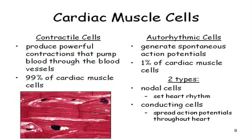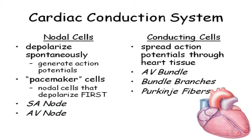To recap: most cells are contractile cells. The technical auto-rhythmic cells — the 1% — are the ones we're focusing on here. The nodal cells are the cells of the SA node and the AV node. The conducting cells are the AV bundle, the bundle branches, and the Purkinje fibers.